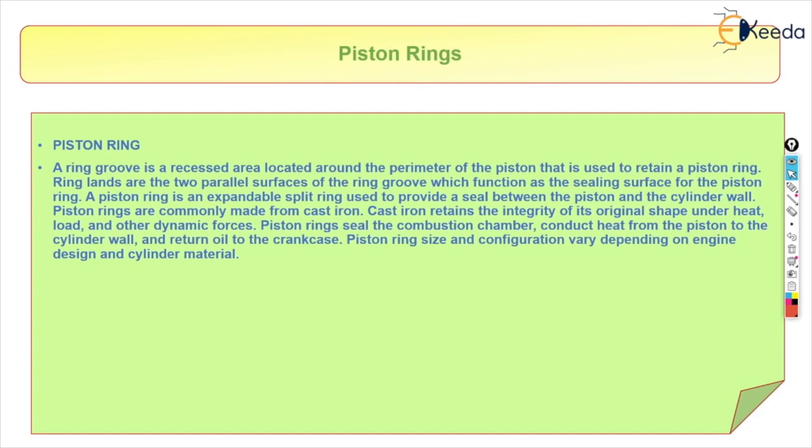The piston groove is a recessed area located around the perimeter of a piston that is used to retain the piston ring. The ring glands are two parallel surfaces of the ring grooves which function as the sealing surface for the piston ring.